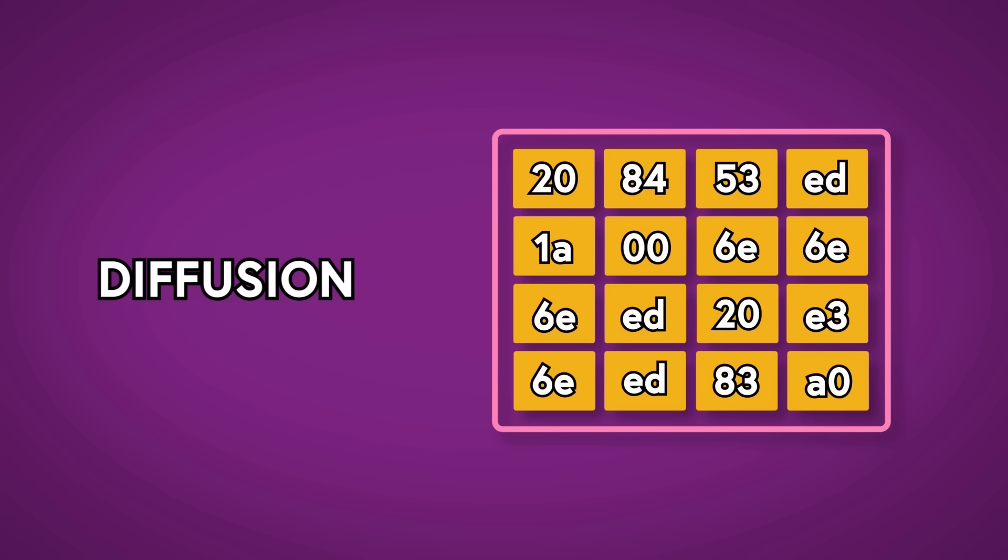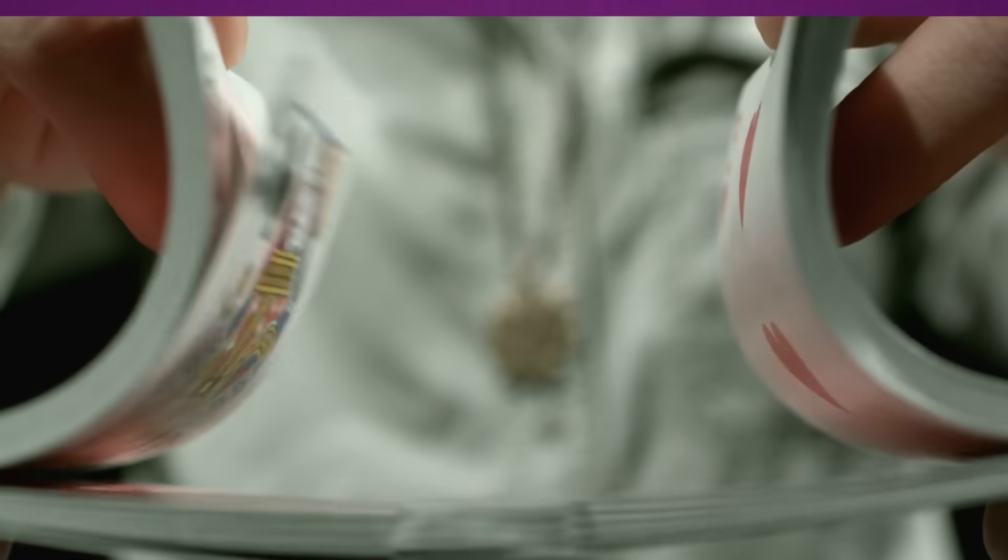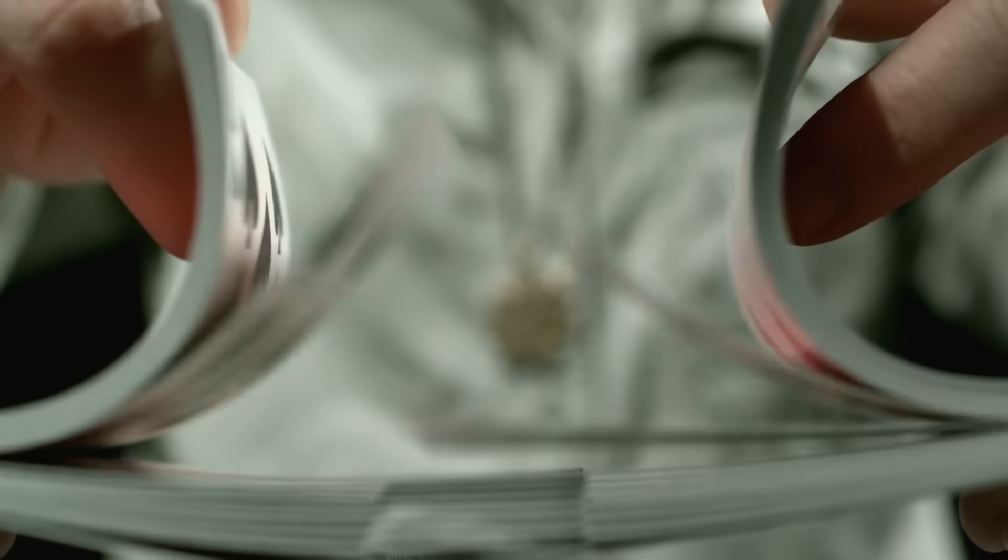If one character always has the same character appear after it, it might be more likely to be Q and U, for example. But now that the text is all mixed up, those relationships are going to disappear.